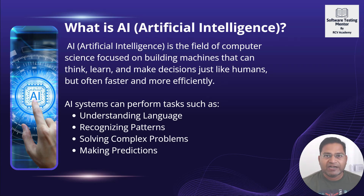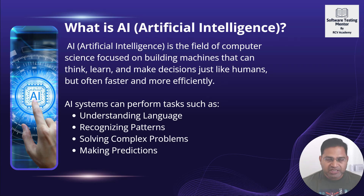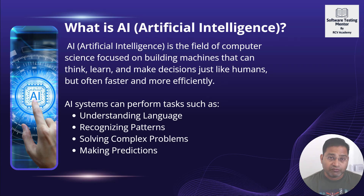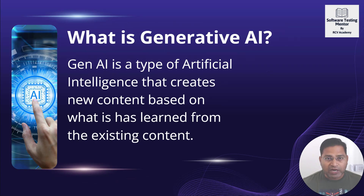Robotics is much more advanced right now, also introducing artificial intelligence so that robots can think, walk, and learn how human beings perform actions. When the intelligence of a human being is mimicked within machines and software, that is artificial intelligence. These AI systems can recognize patterns, solve complex problems, and make predictions — those are some of the many tasks AI systems can do.